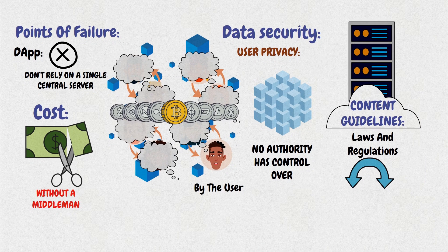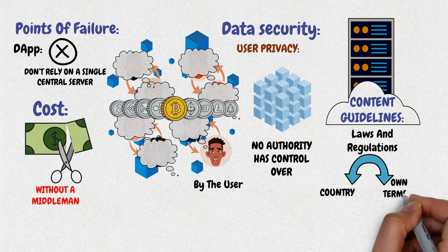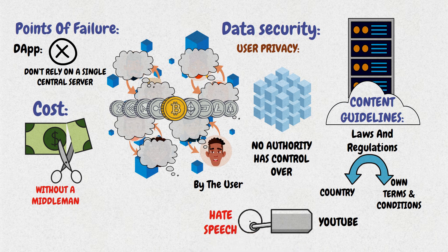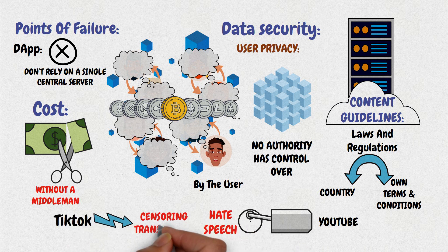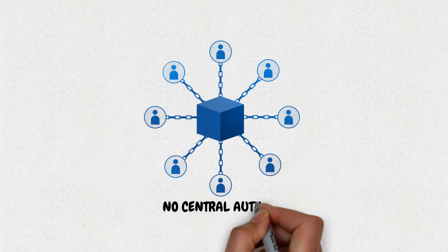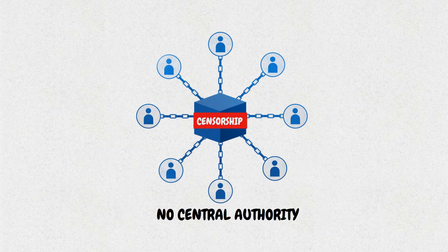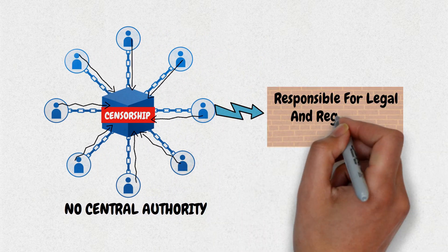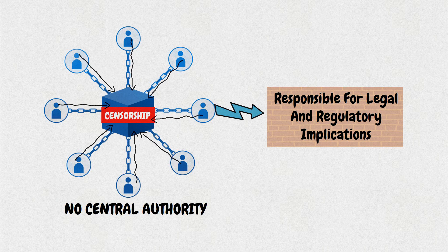Content guidelines: centralized apps follow both the laws and regulations of their country as well as their own arbitrarily decided terms and conditions in deciding which content to publish. For example, YouTube was documented to publish ads of well-known brands in videos including hate speech. TikTok was accused of censoring transgender users. dApps have no central authority exercising censorship — users cannot be blocked from submitting transactions, deploying dApps, or reading data from the blockchain. Users are responsible for legal and regulatory implications for the content they share or consume.